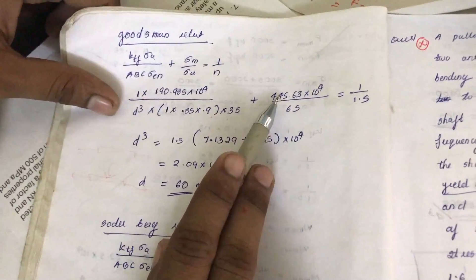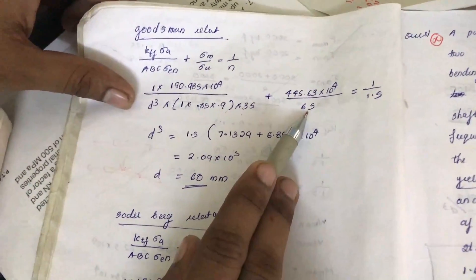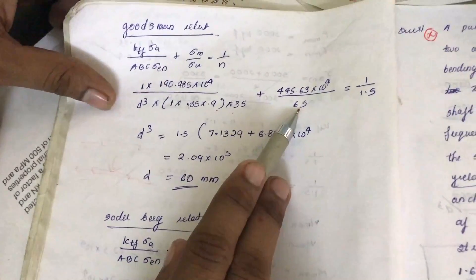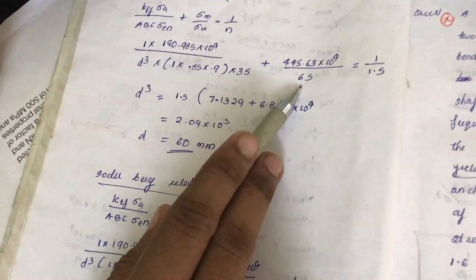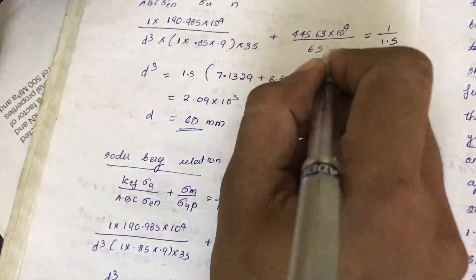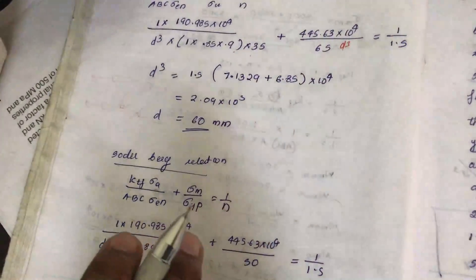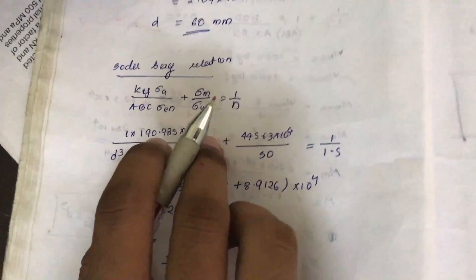Sigma EN is written. Similarly, sigma M equals 445.634/D³ divided by sigma U (ultimate strength given). Here there is D³ in the equation, so from this we can solve and find D. D equals 60mm.